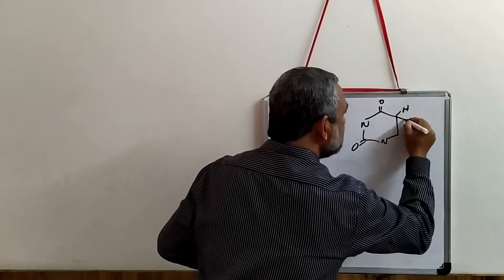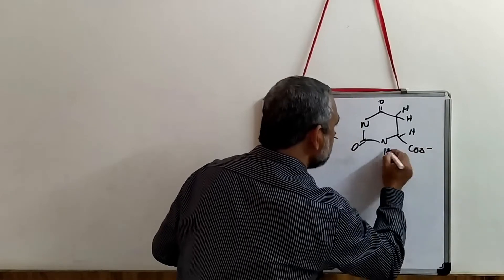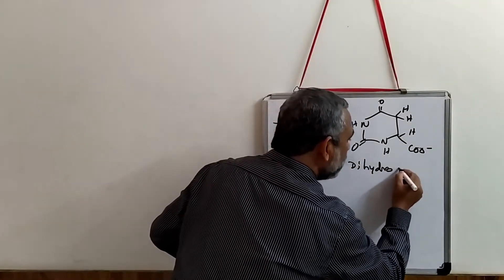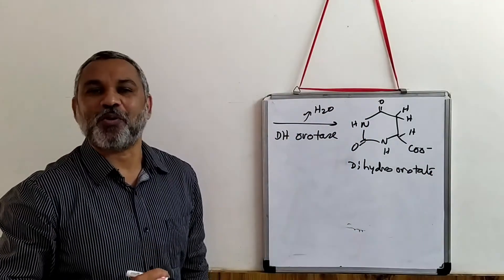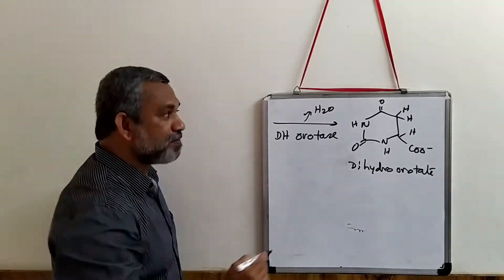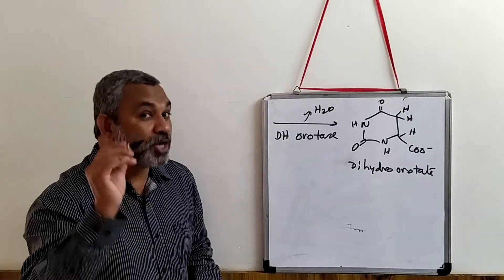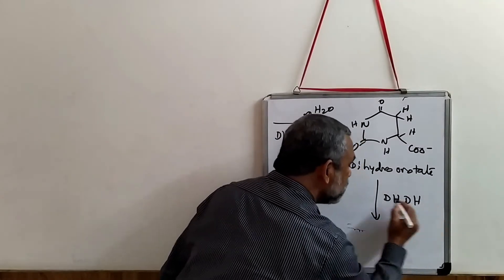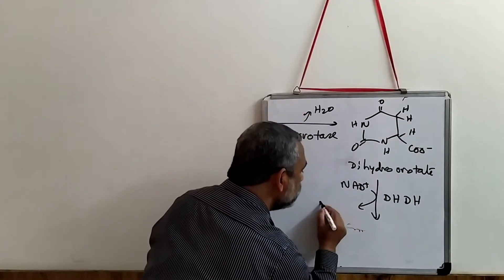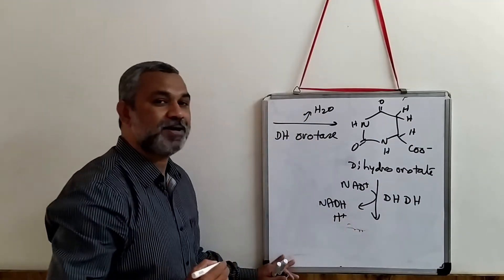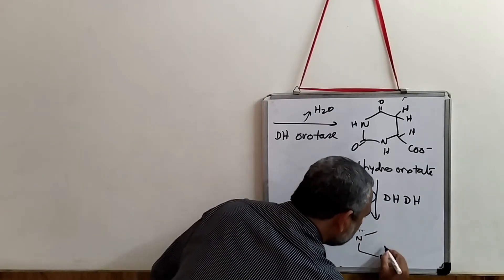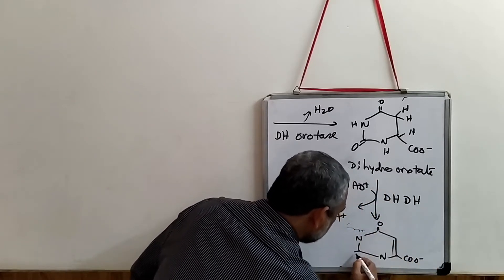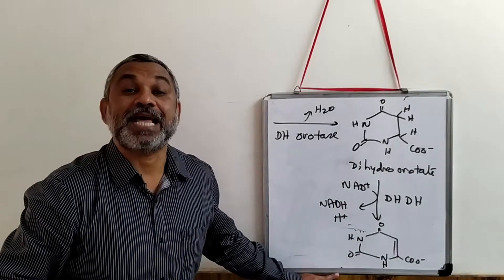The structure of dihydroorotate has two hydrogens, one hydrogen, and a COO minus group. Once you have dihydroorotate, step number four involves removing those two hydrogens. This is carried out by the enzyme dihydroorotate dehydrogenase, which is an NAD-dependent enzyme. It removes the two hydrogens, producing NADH plus H+, and the product is orotate, which now has a double bond.